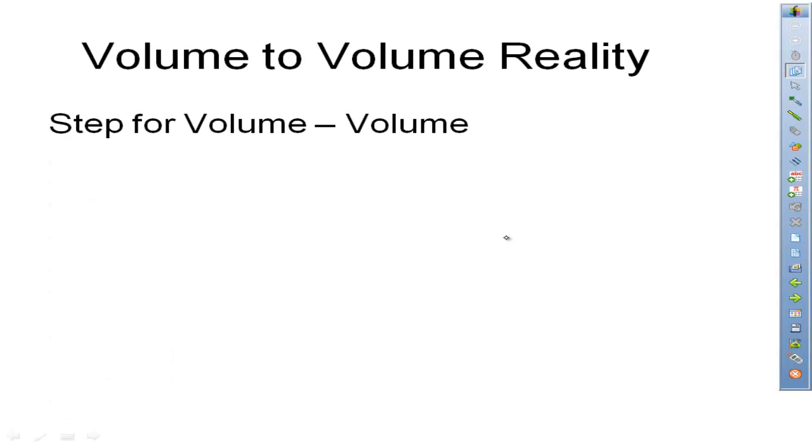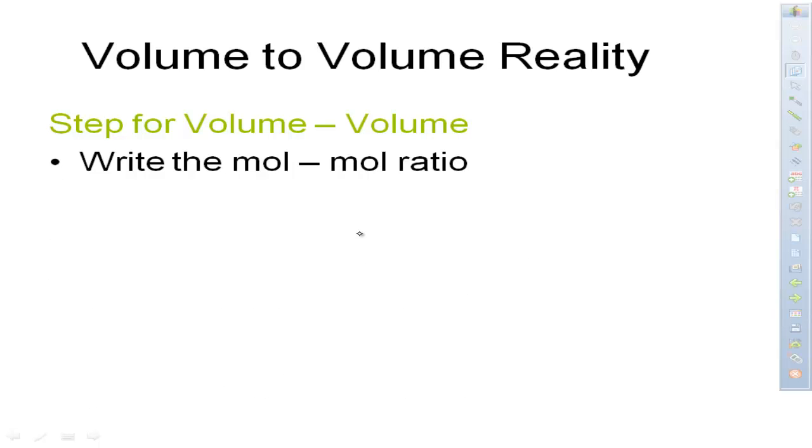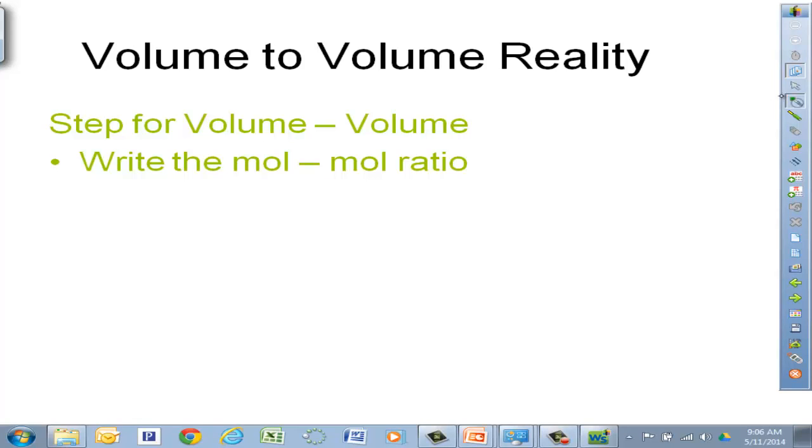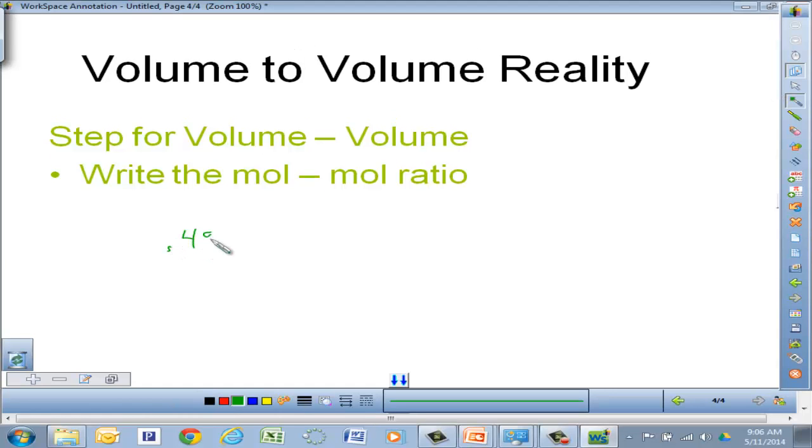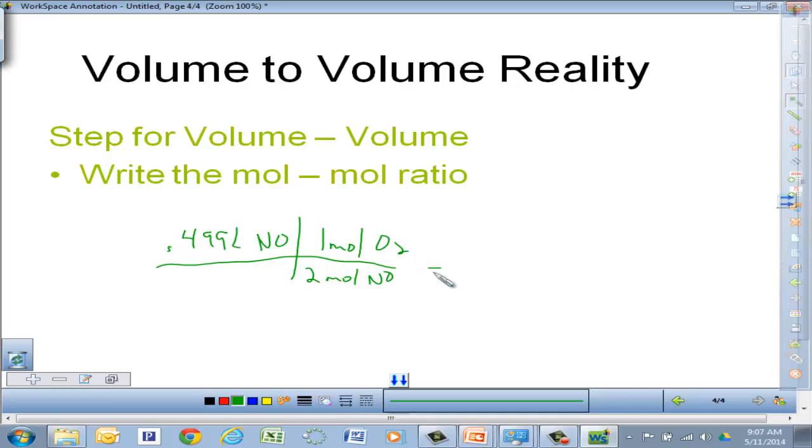So let's look at the true steps for volume to volume. Write the mole to mole ratio. Well, technically you have to balance the equation, but really all you have to do is the mole to mole ratio. So that previous problem that we just had, 0.499 liters of NO, the only thing you really have to do is say 2 moles of NO for every 1 mole of oxygen. And when you run that through your calculator, you'll end up with 0.2495 liters of oxygen.